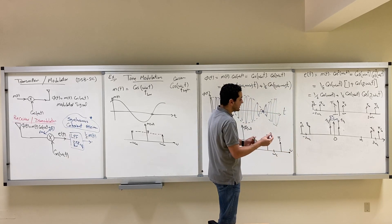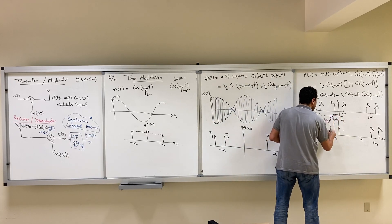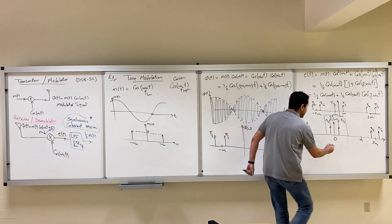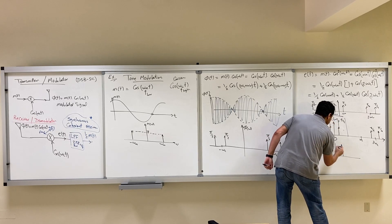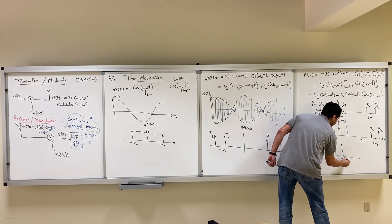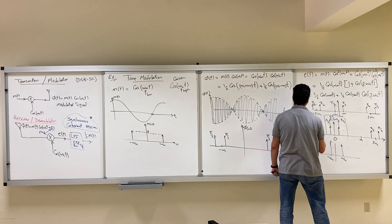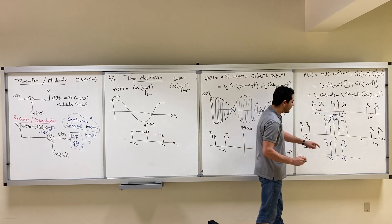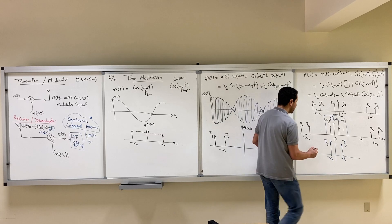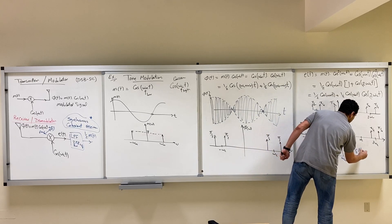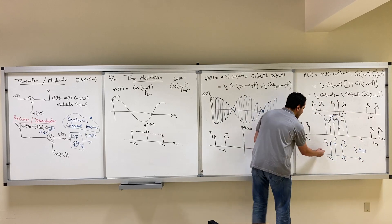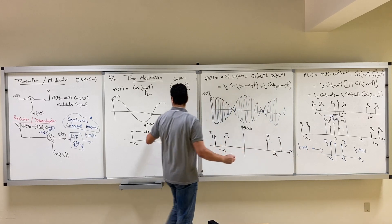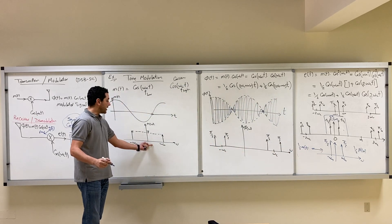If we pass the spectrum E(omega) through a low-pass filter, we keep only the components around zero — the two deltas at omega_M and minus omega_M with area pi/2 each. This is half M(omega) in the frequency domain, which corresponds to half m(t) in the time domain. So you recover exactly your original signal, but multiplied by one half.